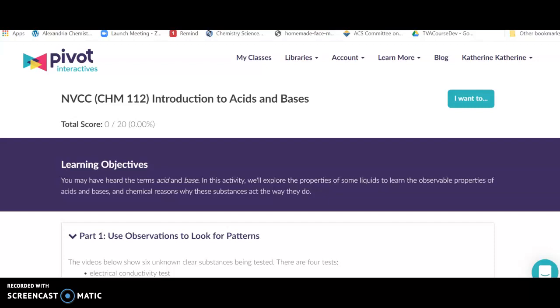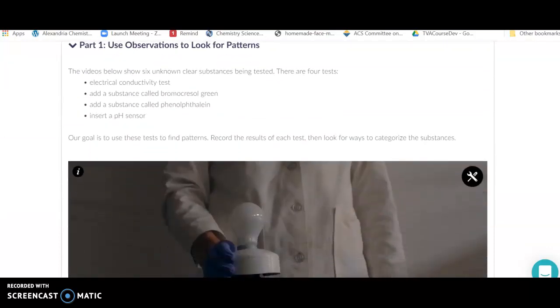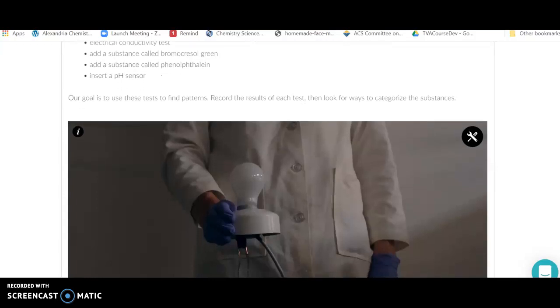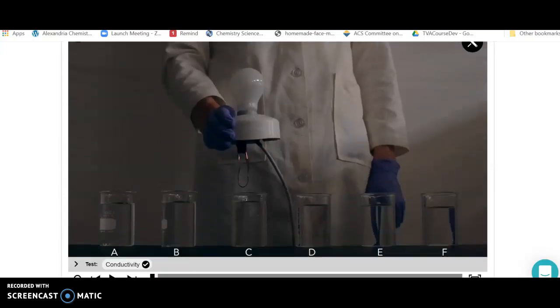This is the Pivot Labs. In order to introduce you to acids and bases, we're going to start out by looking at just some patterns. What we're going to consider are a couple of indicators, bromocresol green and phenolphthalein, an actual pH sensor, as well as electrical conductivity.